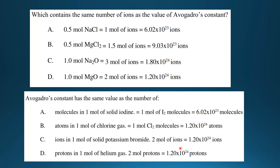The final multiple choice question asks: Avogadro's constant has the same value as the number of — A) molecules in 1 mole of solid iodine, B) atoms in 1 mole of chlorine gas, C) ions in 1 mole of solid potassium bromide, or D) protons in 1 mole of helium gas. For A: 1 mole of solid iodine has 1 mole of I2 molecules, which equals 6.02 x 10²³ molecules. So the answer is A.